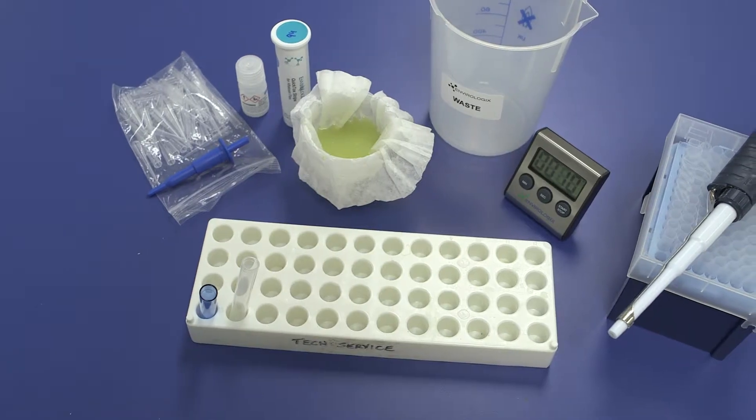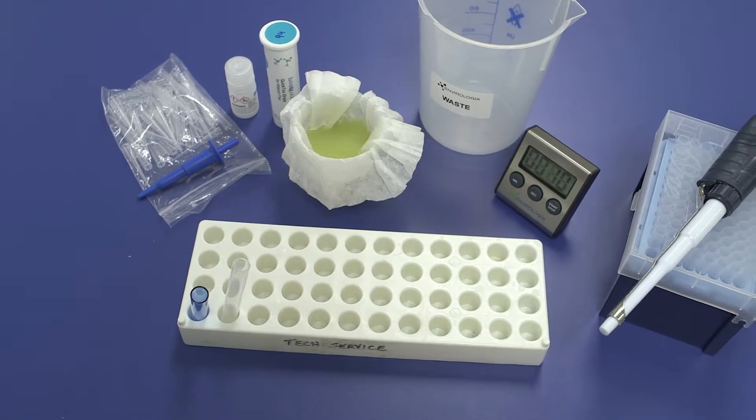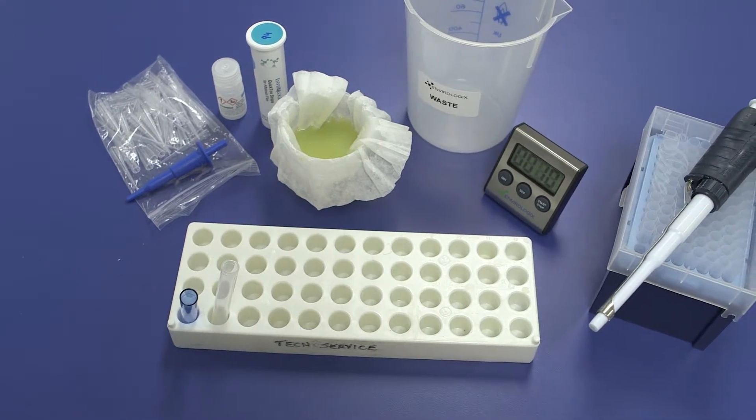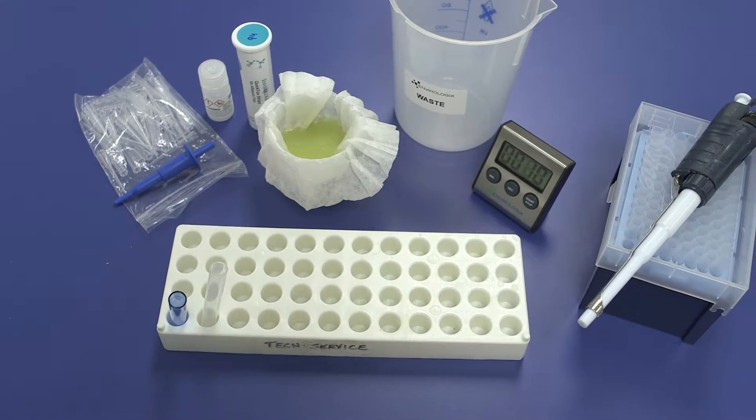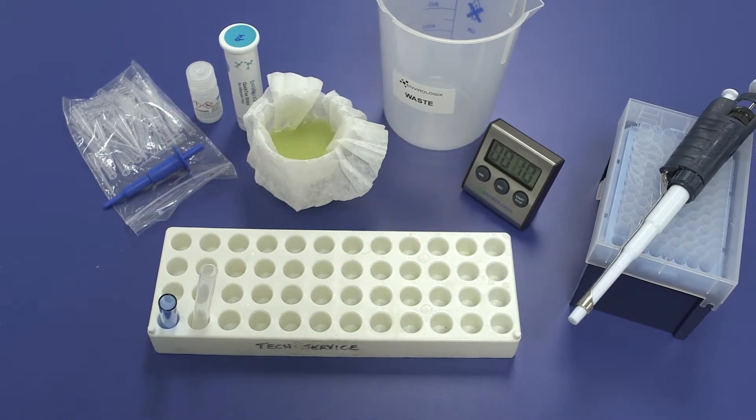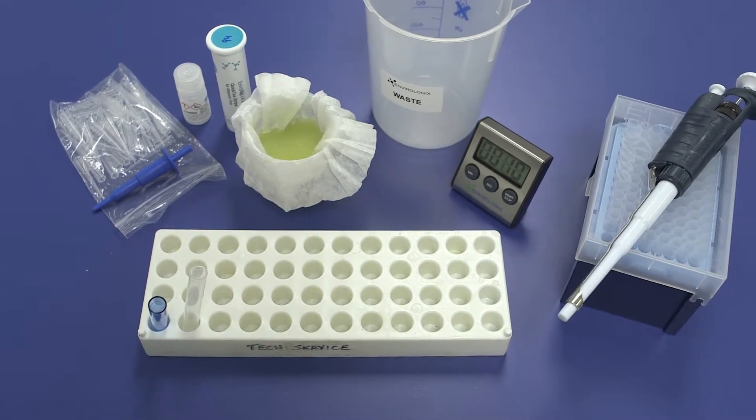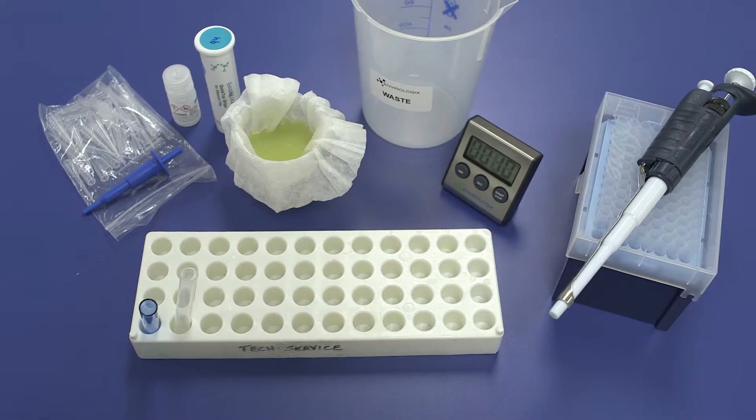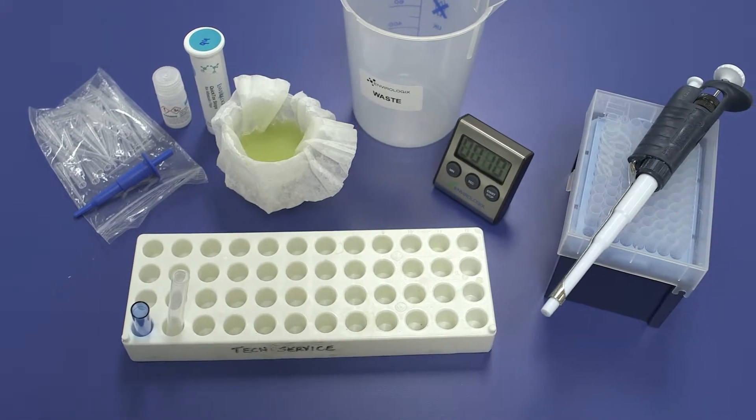Extra tubes and EB-17 pouches are needed when running dilutions. For optimal accuracy, we recommend using a 1-milliliter adjustable pipette for dilution preparation.